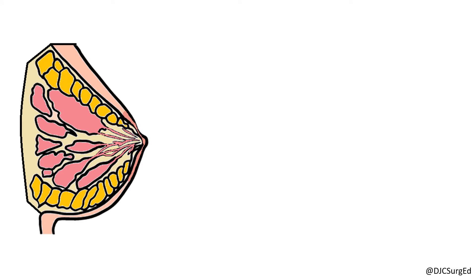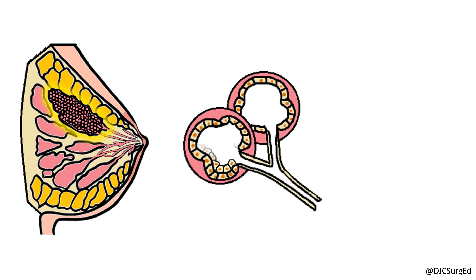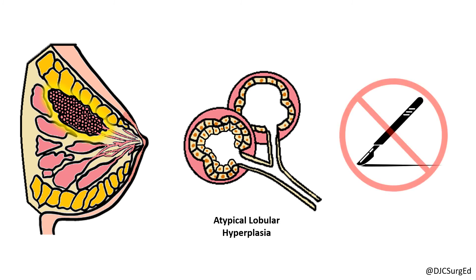Atypical lobular hyperplasia (ALH) is characterized by proliferation of uniform, evenly spaced, discohesive epithelial cells filling part of but not all of an involved lobule. ALH is often an incidental finding, and when seen on core biopsy without discordant imaging, does not require surgical excision but does warrant consideration for chemoprevention.